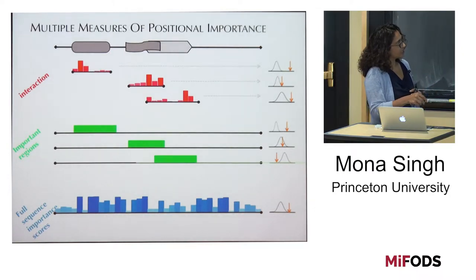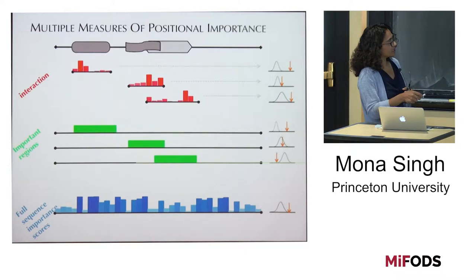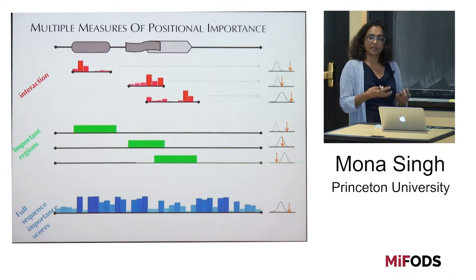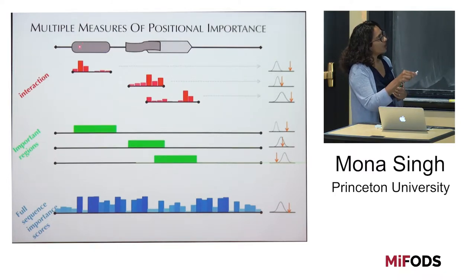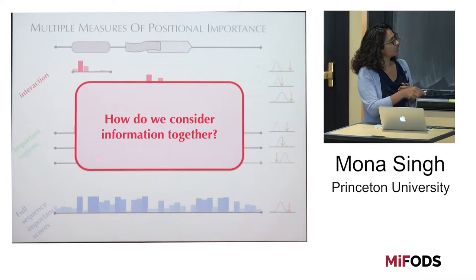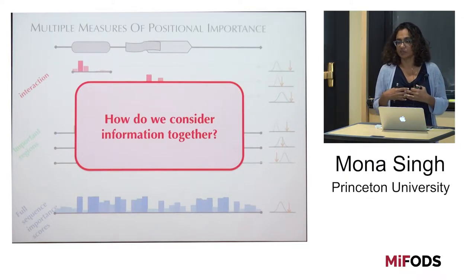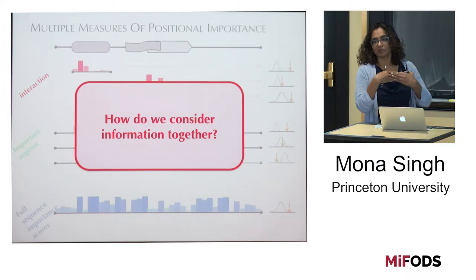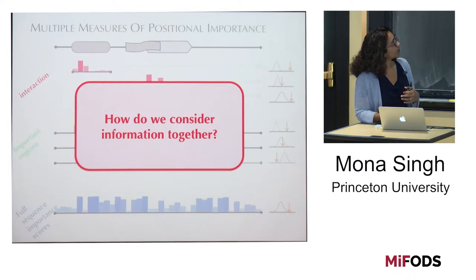The question is how to consider this information together. We can't treat each one separately because these regions can overlap with each other. So let's look at two regions at a time. We have our protein sequence, two modeled regions — shown as contiguous but they need not be. For region V we have interaction weights v_i, for region W we have weights w_i. Let M mutations fall in V and N mutations fall in W. The scores are defined as the sum of weights, and expected values and variances are computed as before.